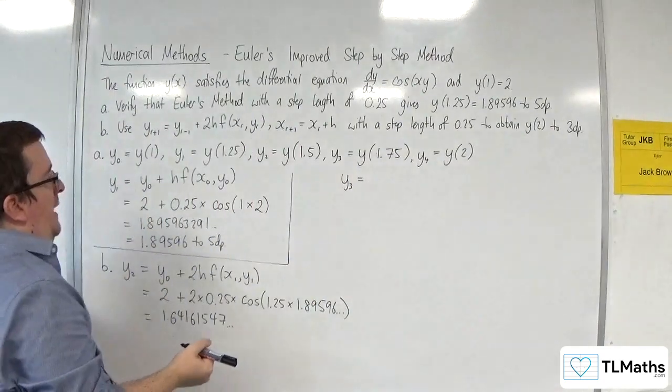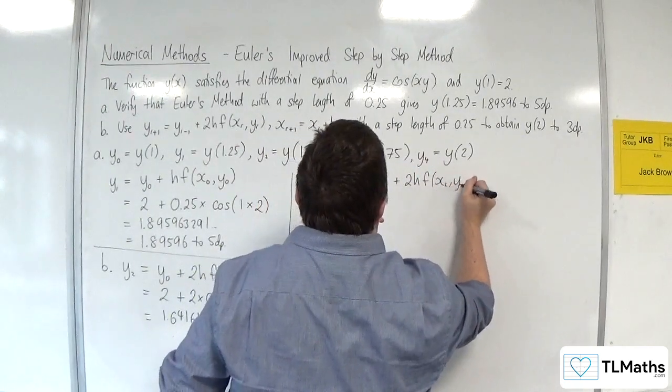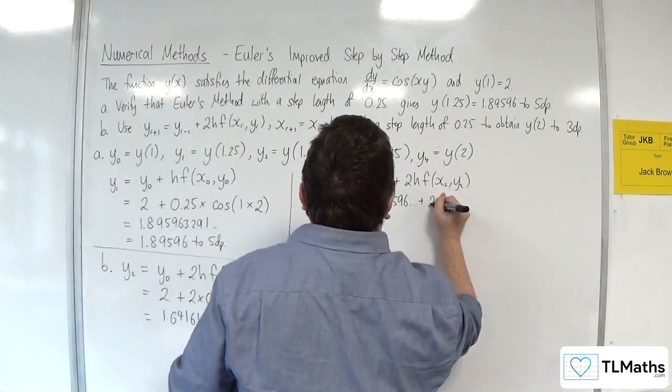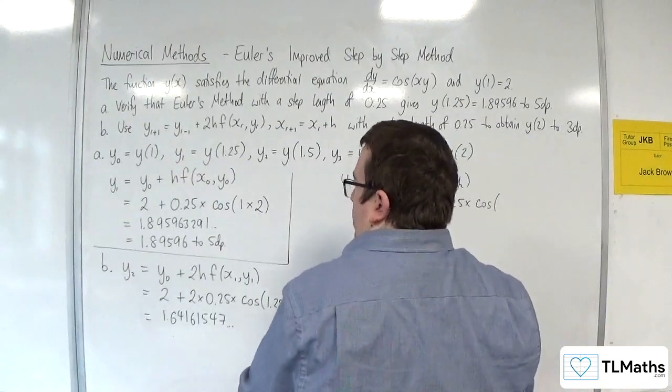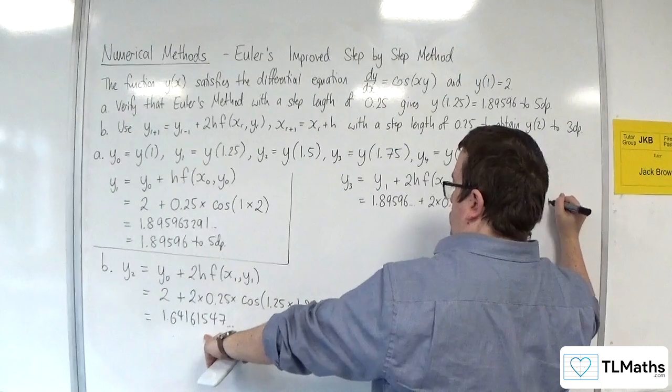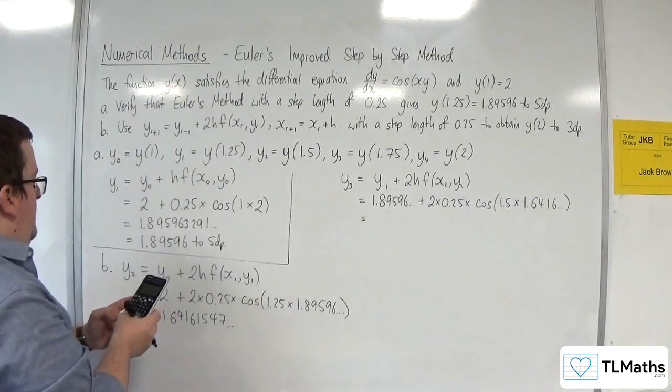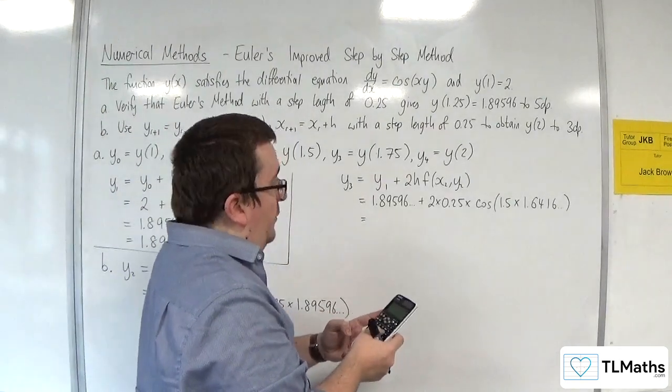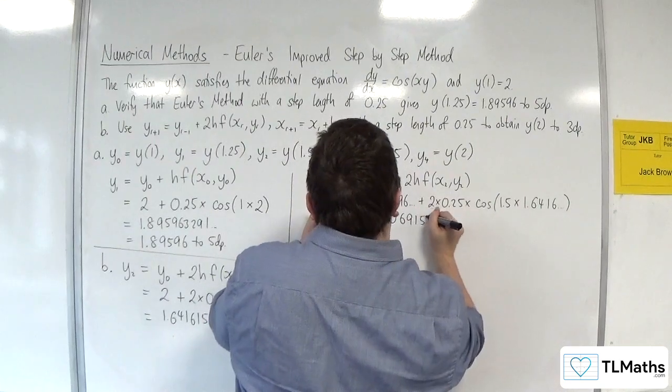So y3 is going to be equal to y1 plus 2h times f of x2, y2. So y of 1 was this 1.89596, etc., plus 2 lots of 0.25 times cosine of x2, y2. Now x2 is 1.5, and y2 was the 1.6416, etc. So we have 1.895963291, this is why I'll write out the full calculator display so that I can type it straight in, plus 2 lots of 0.25 times cosine of 1.5 times the answer key, and we should get 1.50695944.